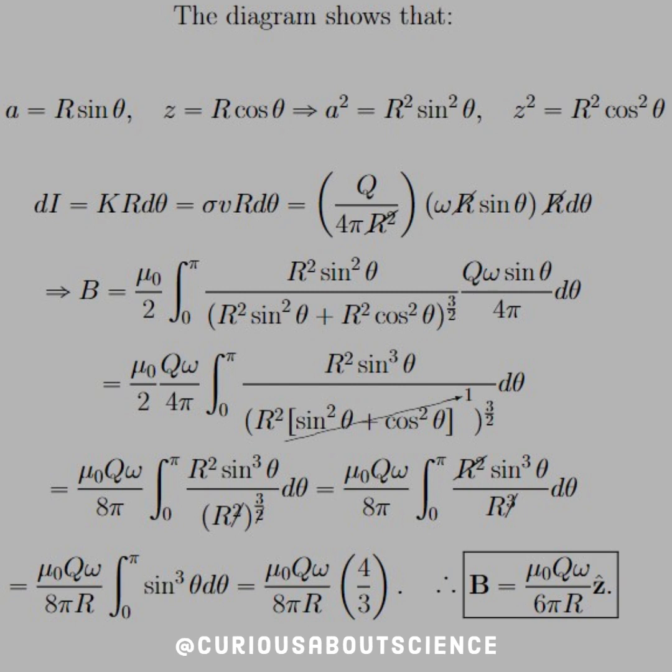So therefore, we can say that the field at the center is mu naught Q omega over 6 pi R in the Z-hat direction. That was pretty cool to see come together.